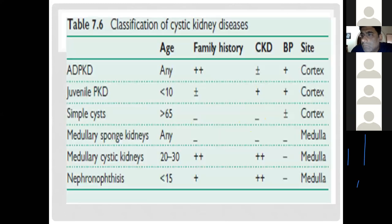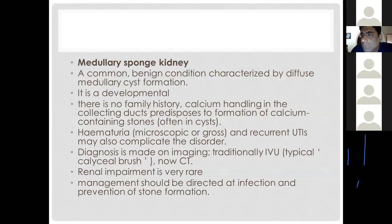Medullary sponge kidney is a genetic disorder that runs in families and is generally a benign condition, as renal failure is less likely. The main problems are UTI and stone formation. Management is directed at treating infection and preventing stones. Diagnosis is made with intravenous urography or, since CT is now widely available, CT urography.